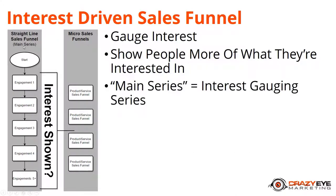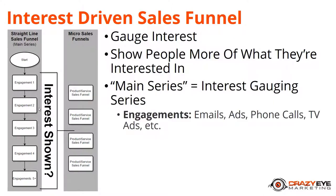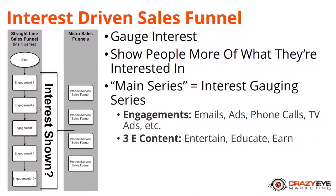On the left-hand side we have a straight-line sales funnel or our main series. The whole point of this main series is to gauge your subscribers' interests. We do that by sending out engagements — whether emails, ads, phone calls, TV ads — putting our content in front of our audience and seeing how they interact. The type of content we share is what I call 3E content: it entertains them, educates them, and the goal is to earn us more money.